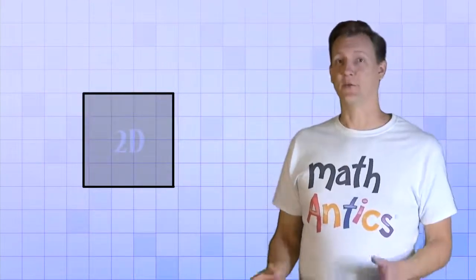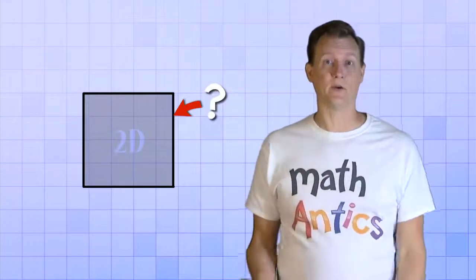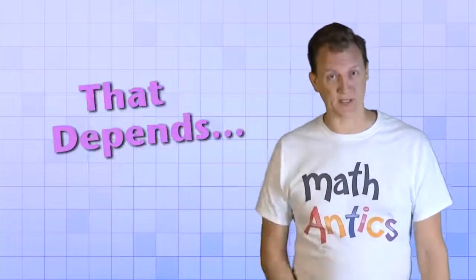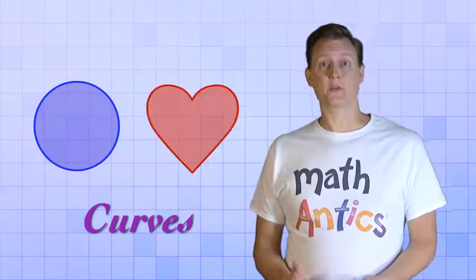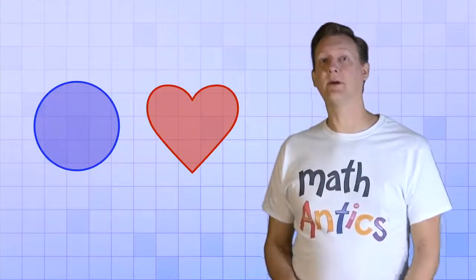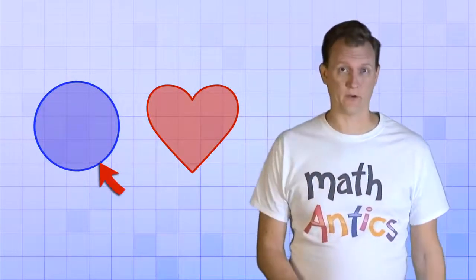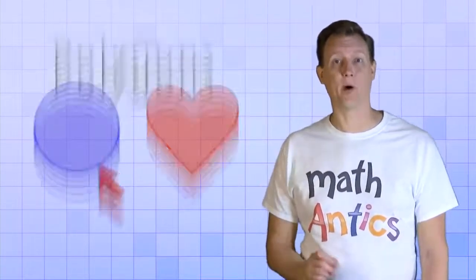So now that you know what perimeter is, how do we measure or calculate it for different geometric shapes? Well, that depends on the shapes. Finding the perimeter of shapes that have curves, like circles or hearts or things like that, can be tricky. In fact, we'll wait and talk about the perimeter of a circle in another video. In this video, we're just going to focus on how to find the perimeter of polygons.